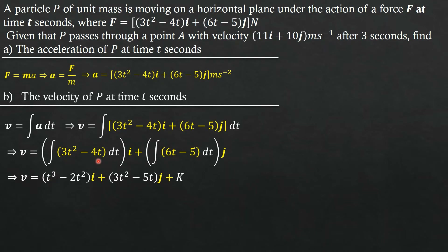Integrating 3T² we get 3T³/3, the 3s cancel giving T³. Integrating 4T we get 4T²/2, which simplifies to 2T². So the i-direction gives T³ − 2T². Integrating 6T we get 6T²/2 = 3T², and integrating 5 we get 5T. So the j-direction gives 3T² − 5T. Since these are indefinite integrals, we need to add a constant of integration, which we'll call C.